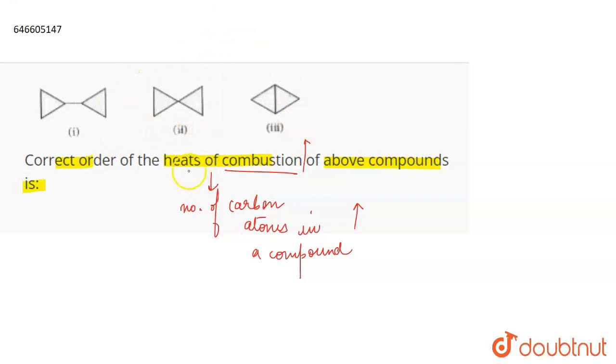What happens in combustion is that a substance burns in the presence of oxygen and leads to the formation of the products carbon dioxide and oxygen. These are the products of combustion. The heat of combustion depends upon the number of carbon atoms. More the number of carbon atoms in a compound, more will be the heat released or heat liberated on combustion.